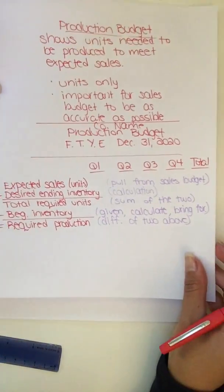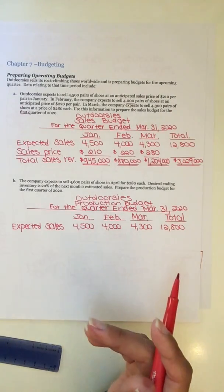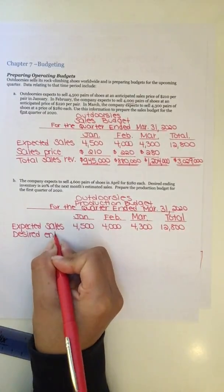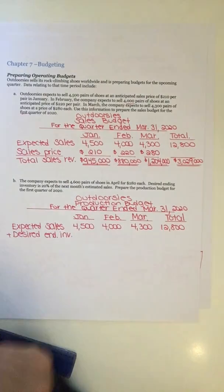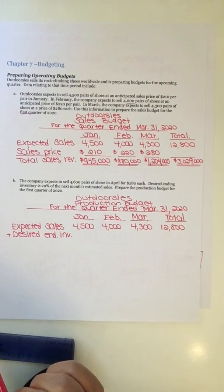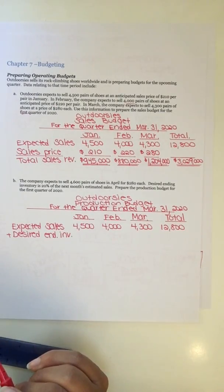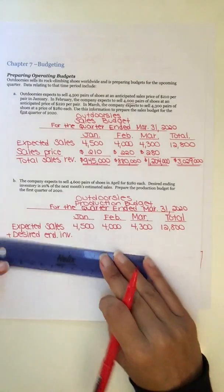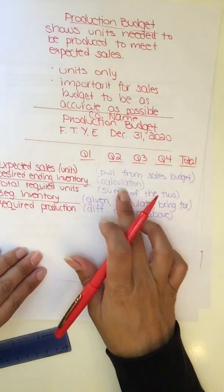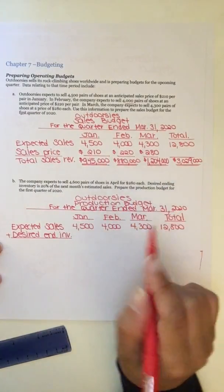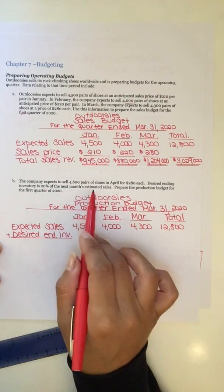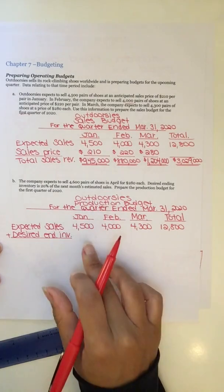Then remember what your next line is. It's the desired ending inventory. So we're going to add desired ending inventory. I'm fine if you want to put a little plus sign there. Some budgets will actually write out the word add, right? Kind of like we did on the statement of retained earnings last semester. So either way is fine. Add your desired ending inventory. So for that we need a little more information because we said it's usually a calculation. So let's go back and read this prompt here.